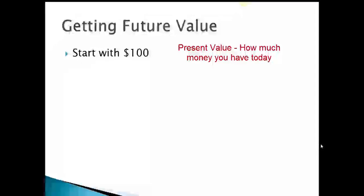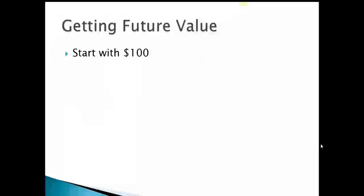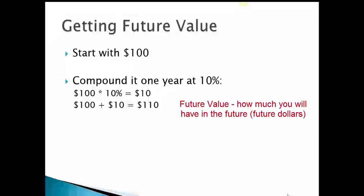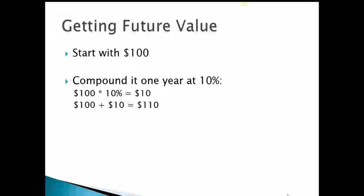Let's assume we start with $100 — that's called the present value. We'll let that money grow for one year at a ten percent interest rate. Our $100 earning ten percent earns us $10. Adding that to our initial investment, we end up after one year with $110 total. That's the future value of $100 after one year assuming we earn ten percent.